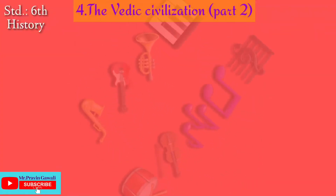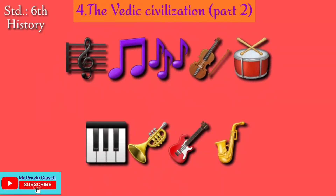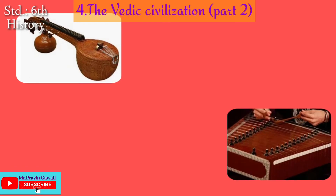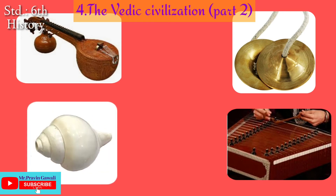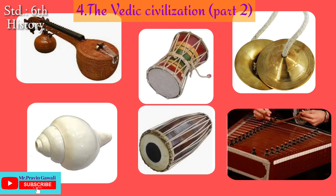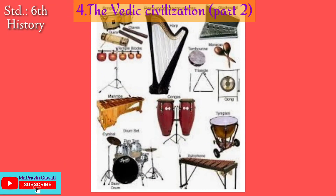Their main musical instruments were Veena, Shatatantu, cymbals, and Kank. Percussion instruments like Damburu and Mridanga were also used. Percussion instruments are those played by striking with the hand, a stick, or beater, or by shaking — including drums, cymbals, xylophones, gongs, bells, and rattles.